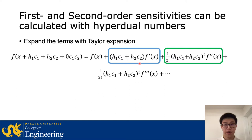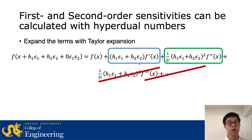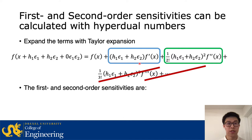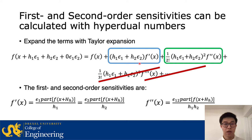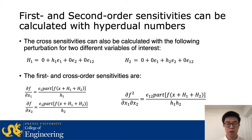All higher-order sensitivities will contain ε₁², ε₂², or ε₁₂², which makes them equal to zero, so all higher-order terms cancel out. The first-order sensitivity is simply the ε₁ part of the output divided by h₁, or the ε₂ part divided by h₂. The second-order sensitivity is in the ε₁₂ part, divided by h₁ and multiplied by h₂.